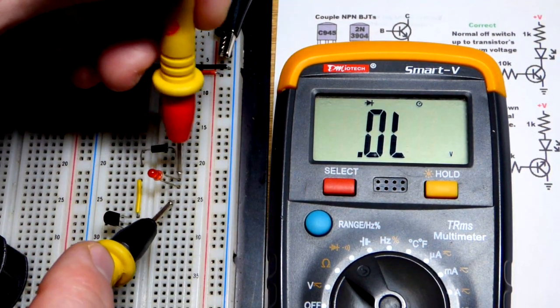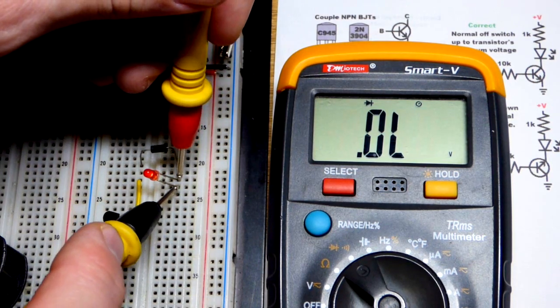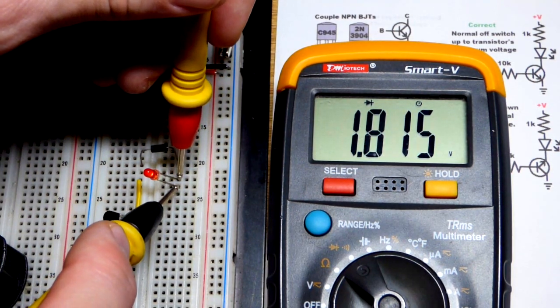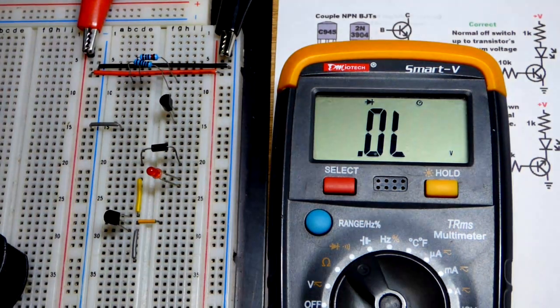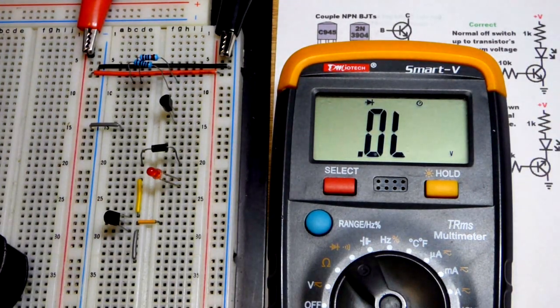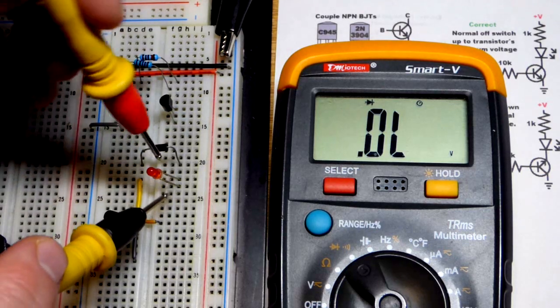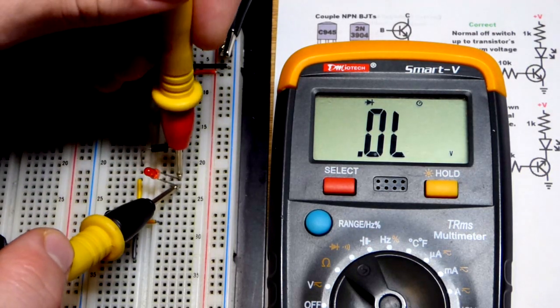So, I know the anode is on top, cathode on bottom. Unless I did mess up. So, there you can see we have the forward voltage of the LED. And it's not very bright because, I believe it puts about one milliamp of current through it and only one milliamp of current.